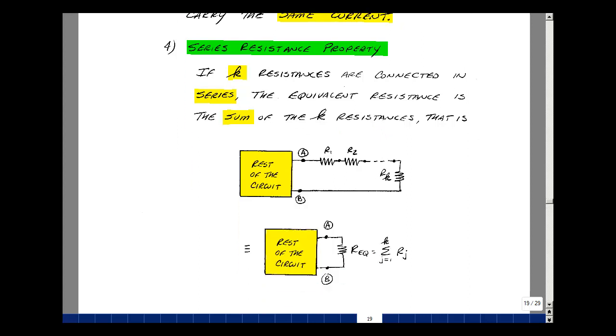Suppose that I have a circuit and I can pull out of it k resistances, and they all share the same current. Again, they're in series. You can replace all of this by a single resistor, called R equivalent, whose value is the sum of the k resistances.